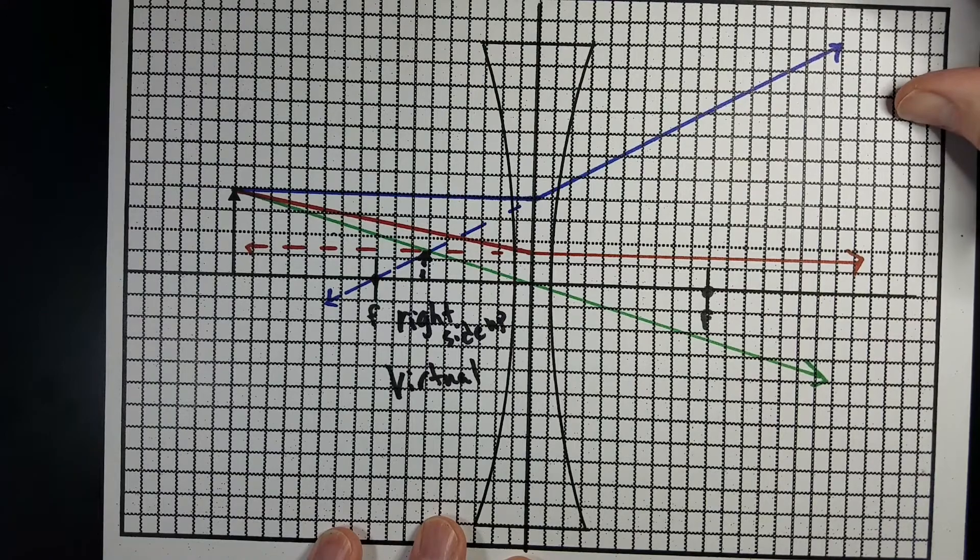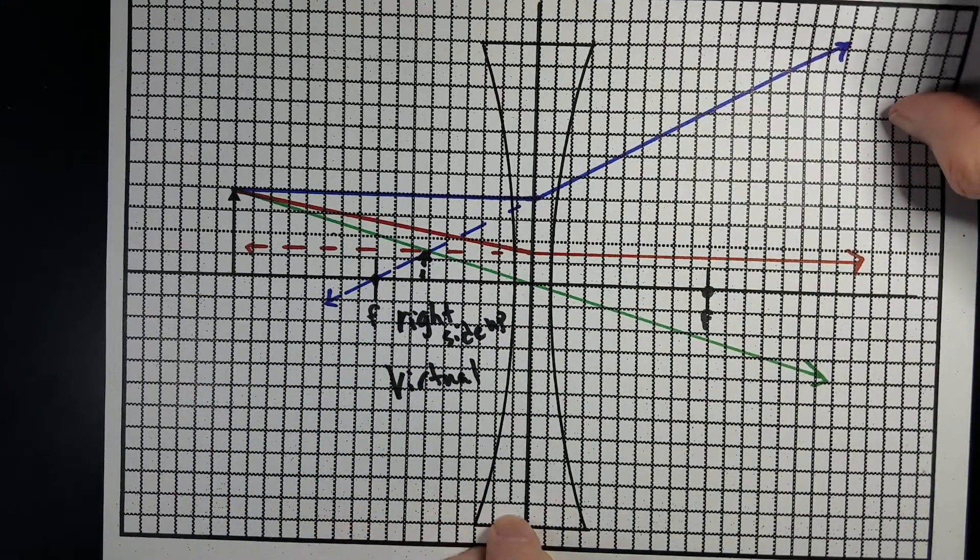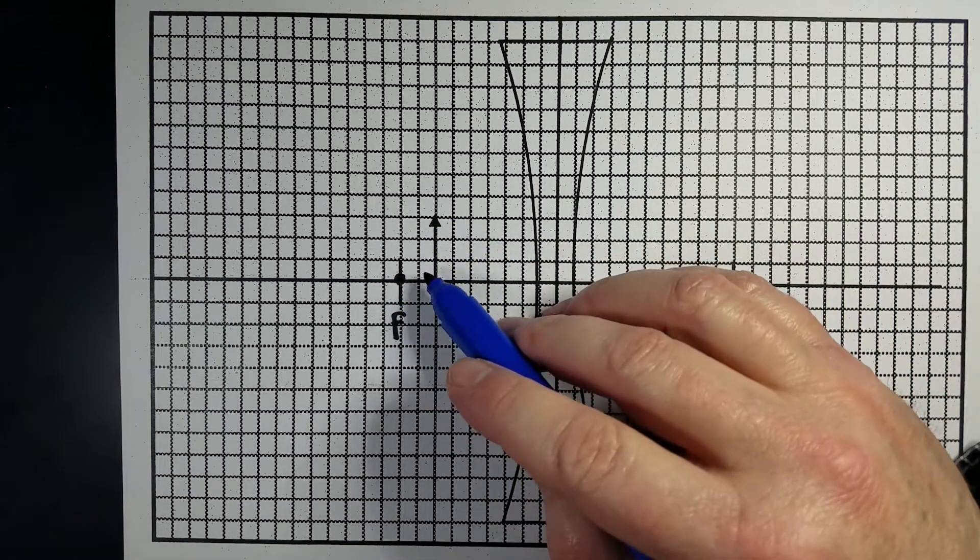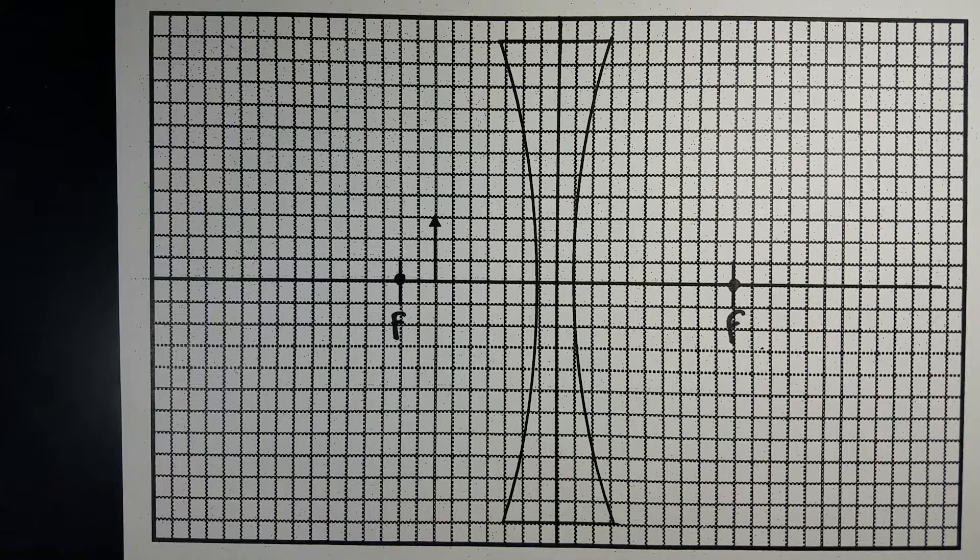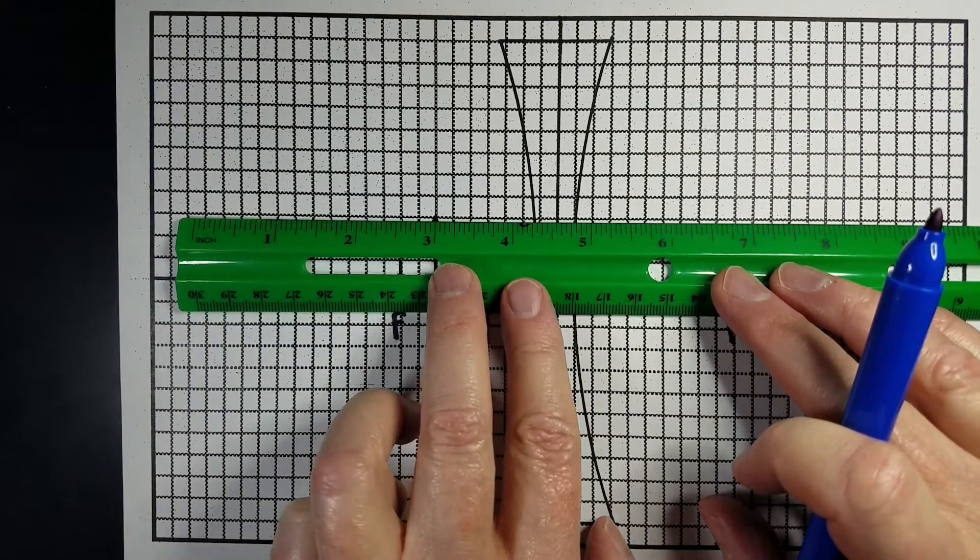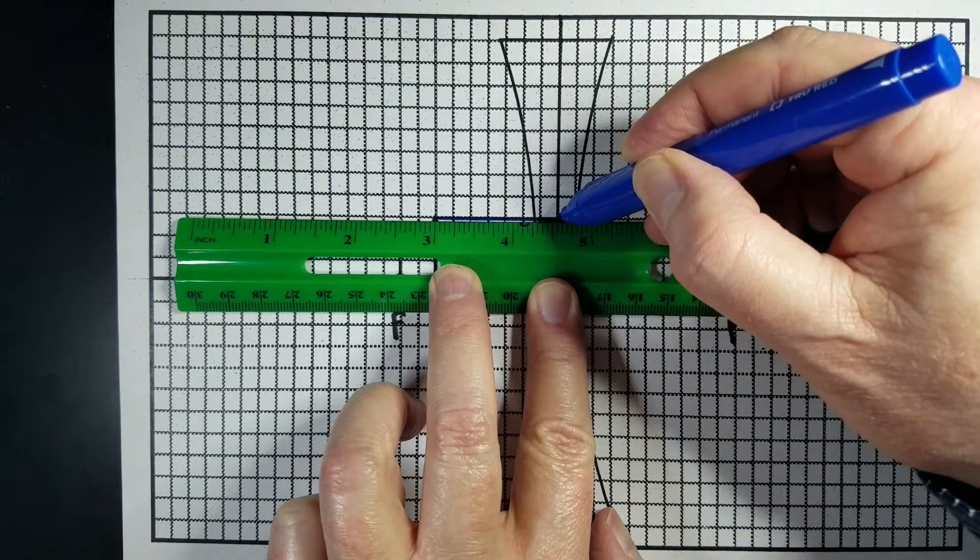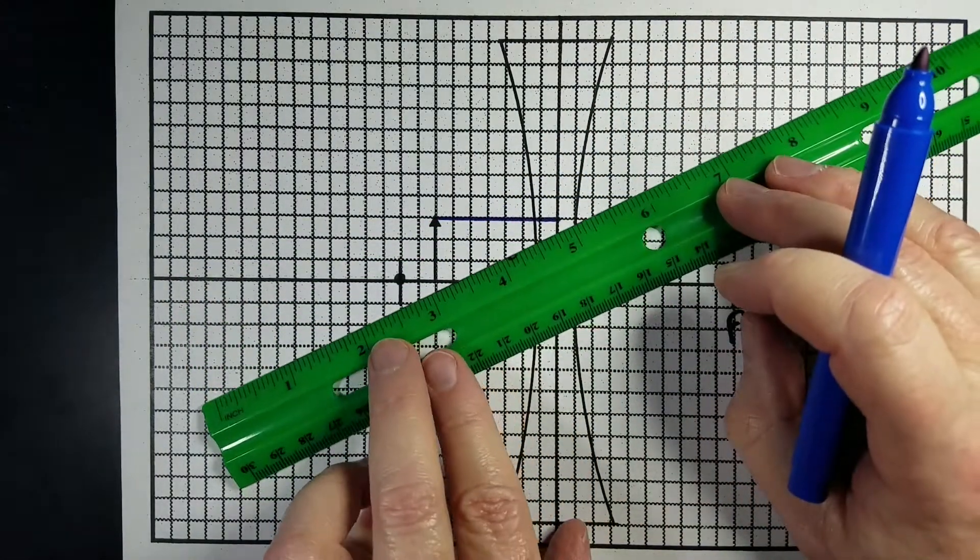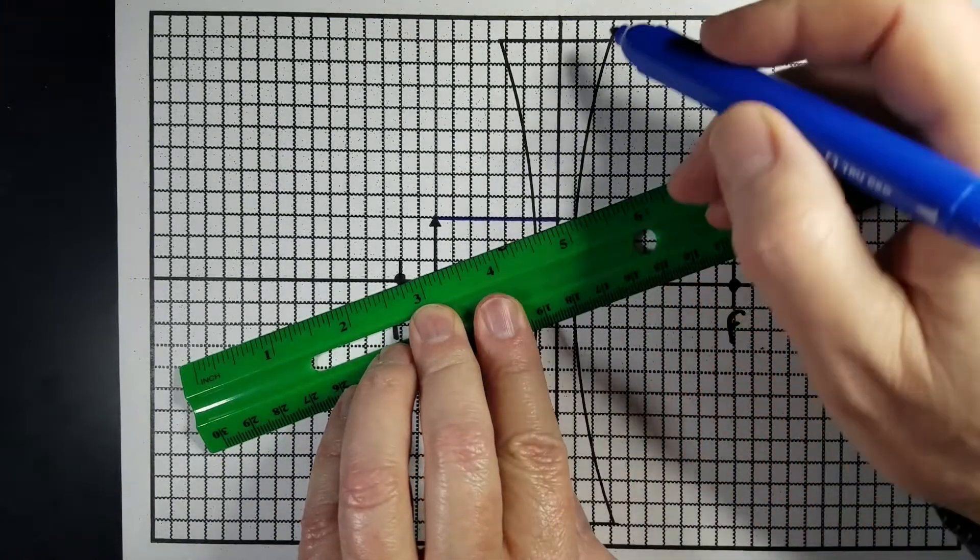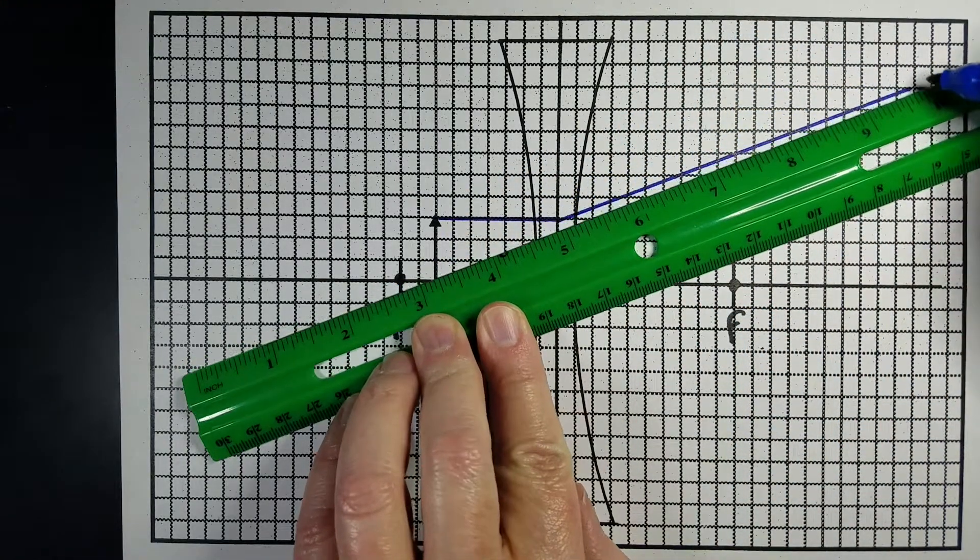Let's do one where we move the object inside the focal length and see what happens there. Alright, we've got our object right here. It's inside the focal length. And we're going to draw the same three rays, starting off with parallel and then focal point. So, just like before, I'm going to start off at the top of the object, draw a line parallel to the principal axis until it hits the center of the lens. Then it's going to refract towards the thicker part of the lens, which means the top on this one, away from that focal point. So it's going to go this way.